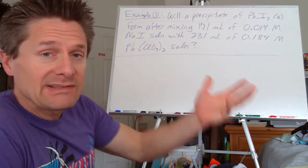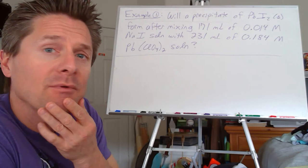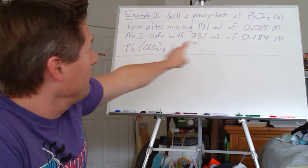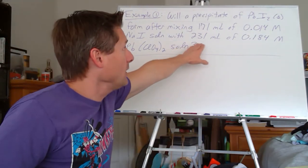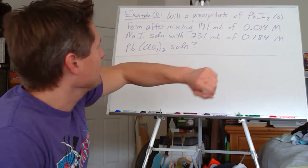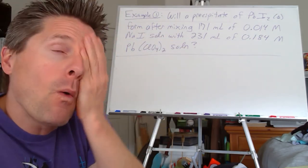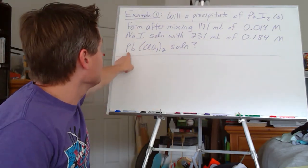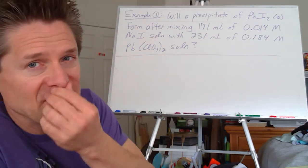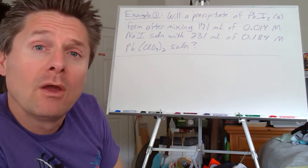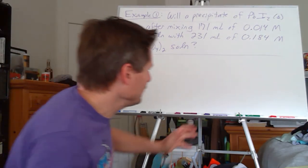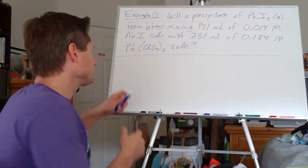Here's the type of problem you'll see on homework, quizzes, or tests. Will a precipitate of lead(II) iodide solid form after mixing 171 mL of a 0.014 M sodium iodide solution with 231 mL of a 0.184 M lead(II) perchlorate solution? Perchlorates are 100% soluble and sodium solutions are 100% soluble. We have four ions: sodium, iodide, lead(II), and perchlorate. If the problem hadn't told us what precipitate to look for, we'd need to identify it first by thinking about which cation-anion combination could potentially form a precipitate.